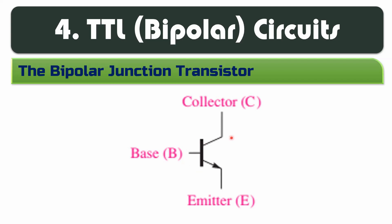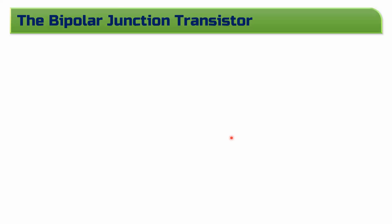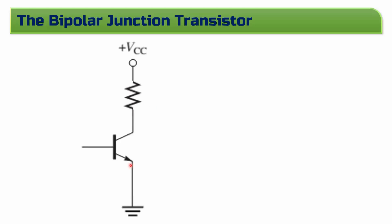How does a transistor work? For a Bipolar Junction Transistor with VCC and ground: if the base voltage is higher than the emitter by 0.7V, this means the transistor is ON. When the transistor is ON, it acts as a closed switch between the collector and emitter, offering a path from VCC to ground.